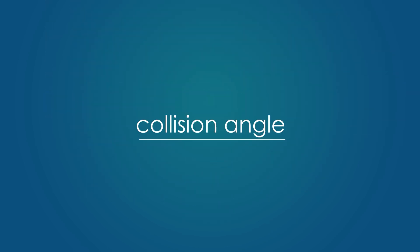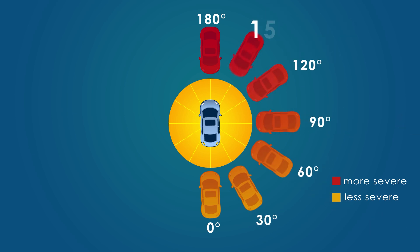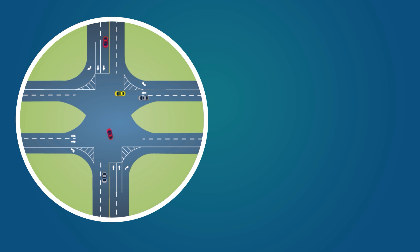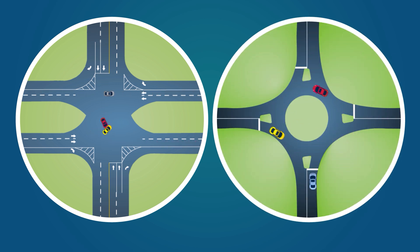Collision angle also influences crash severity. This diagram represents the relative degree of harm in a vehicle-to-vehicle crash at different angles. Traditional intersections present multiple opportunities for vehicles to collide at more dangerous angles, especially during left turns. Intersection designs that change the angles at which vehicles move through reduce the chances of severe crashes.